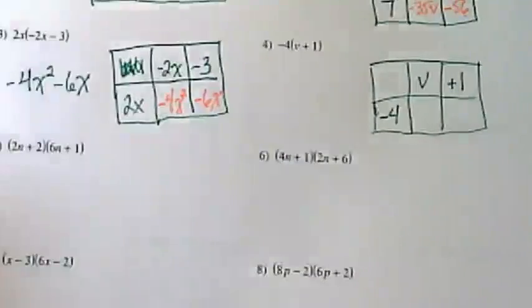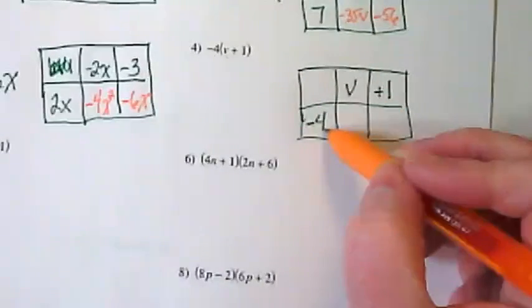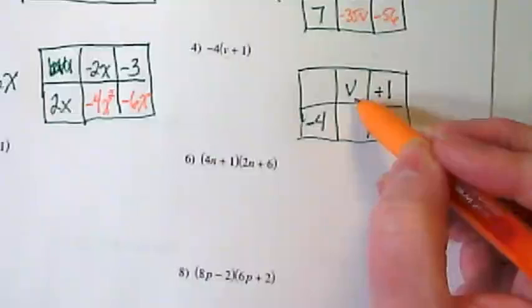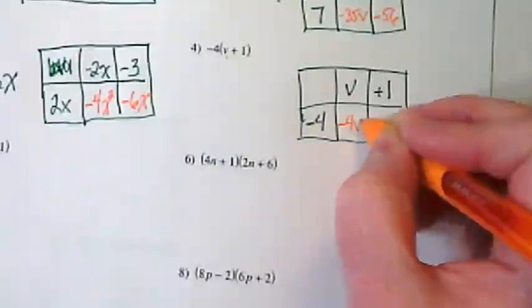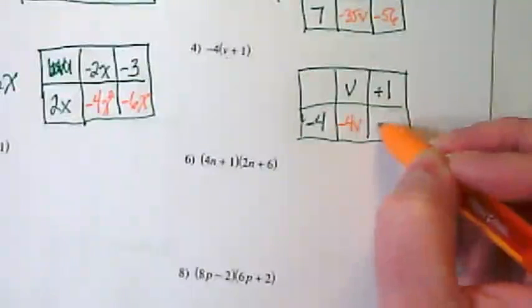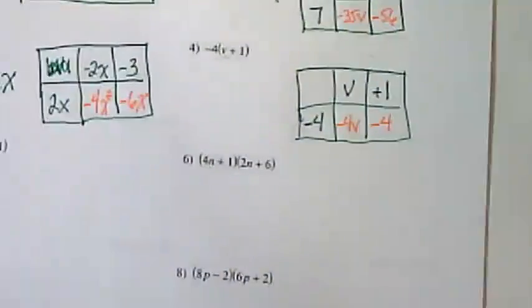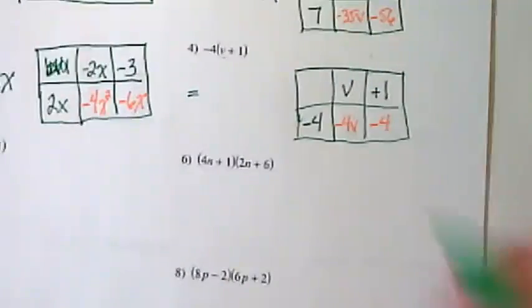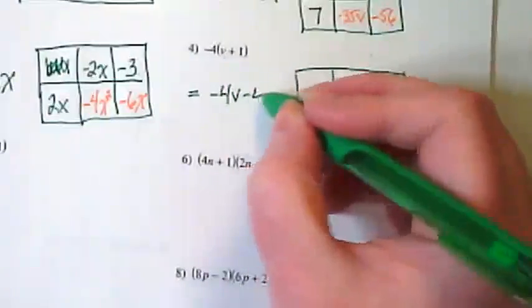Again, writing the positives and negatives can really help keep track. We're multiplying negative 4 times positive v, so we end up with negative 4v, and negative 4 times positive 1 is going to end up being negative 4. And we're going to rewrite this as negative 4v minus 4.